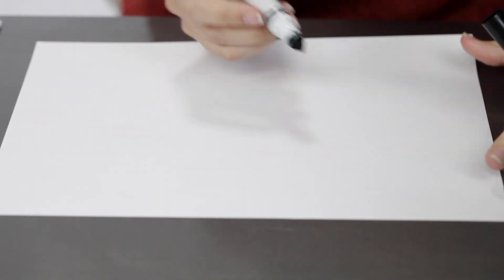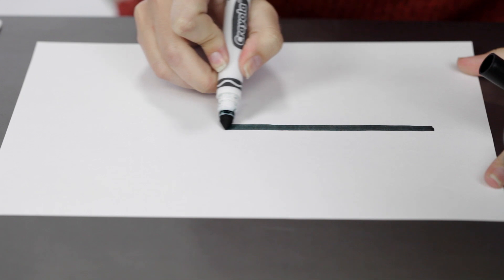The first thing you're going to want to do is draw a line on the paper. You want to make sure it's at least five millimeters thick so that OzoBot can recognize it.